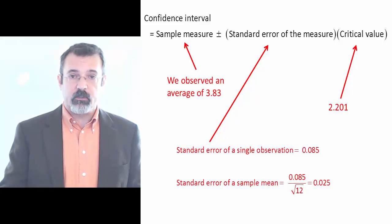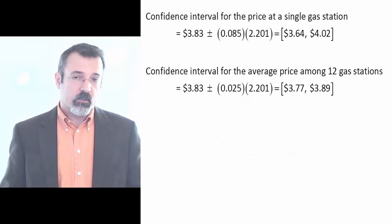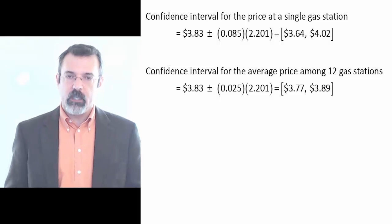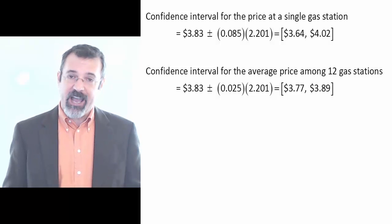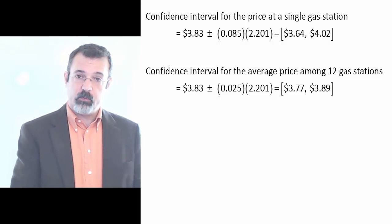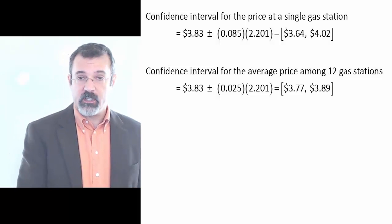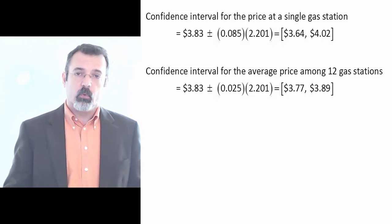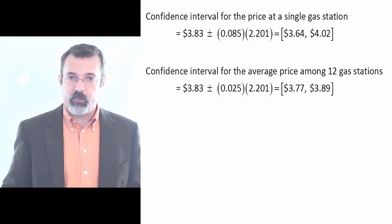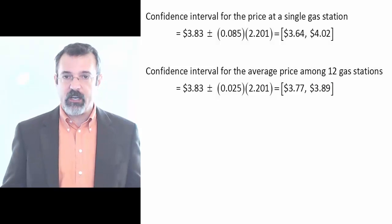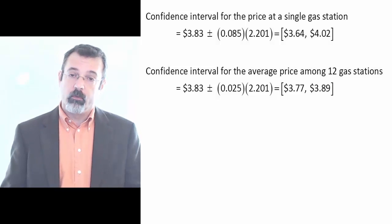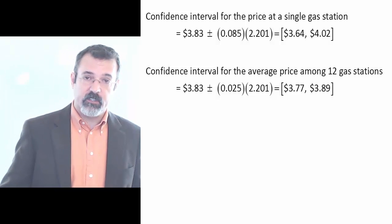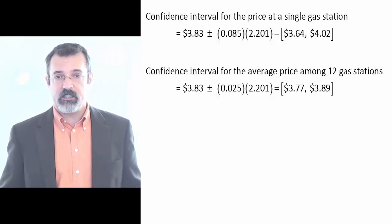Putting these together gives us two confidence intervals. We are 95% certain that the price of gas at a single gas station is between $3.64 and $4.02. And we're 95% certain that the average price of gas over 12 gas stations is between $3.77 and $3.89.